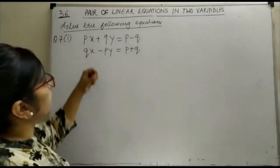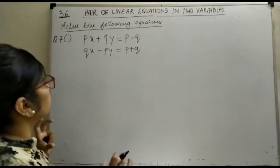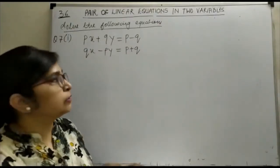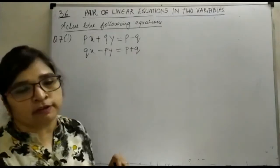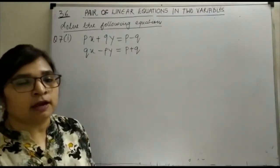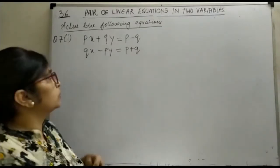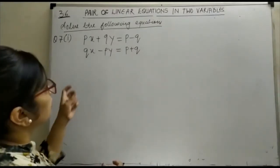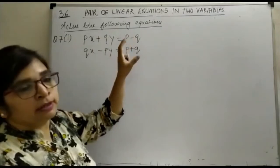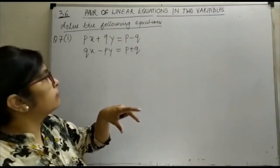Qx minus Py is equal to P plus Q. In this type of question you can use any method to find out the value of x and y, but you can use cross multiplication — that will be very easy compared to the other two. Just see, we are having the constant terms as literal constants because they are not having numerical values.